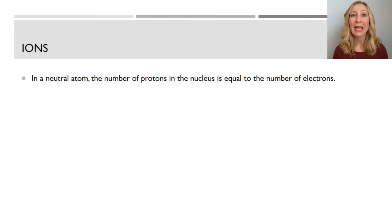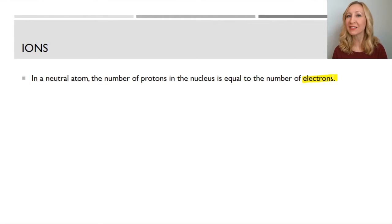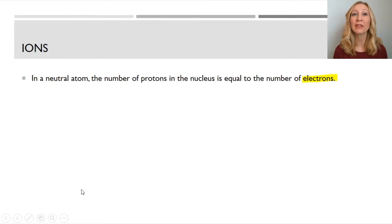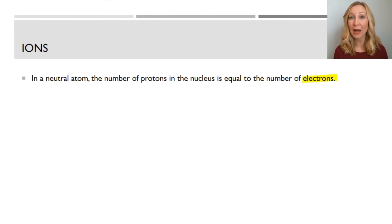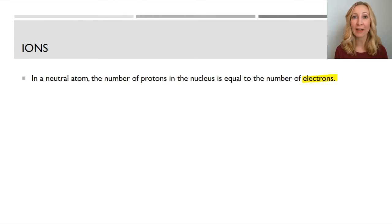You may recall that in a neutral atom, the number of protons, or positively charged particles, equals the number of electrons, or negatively charged particles. So if an atom has five protons — five positive particles — it will also have five electrons, five negative particles.